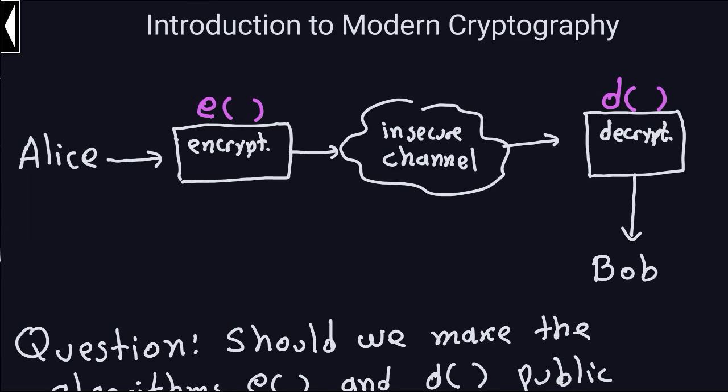Hello and welcome again. This is the third part of the introduction to modern cryptography. As we saw in the previous examples, this is the setup we have: two parties, Alice and Bob, that want to communicate through an insecure channel. They're going to use the encryption algorithm that transforms any plaintext into a ciphertext using a key.